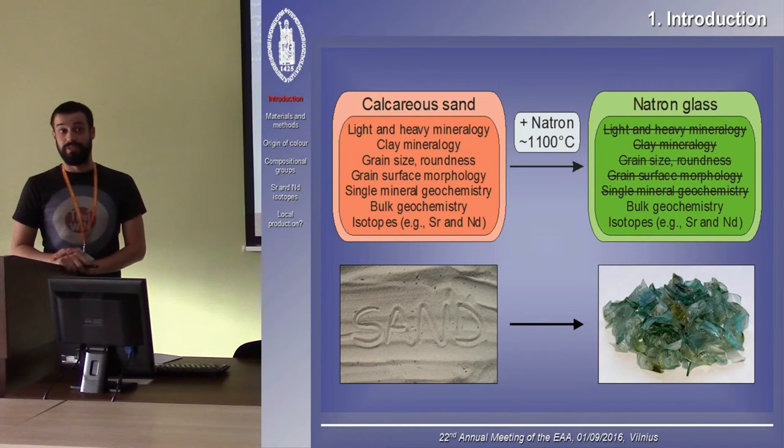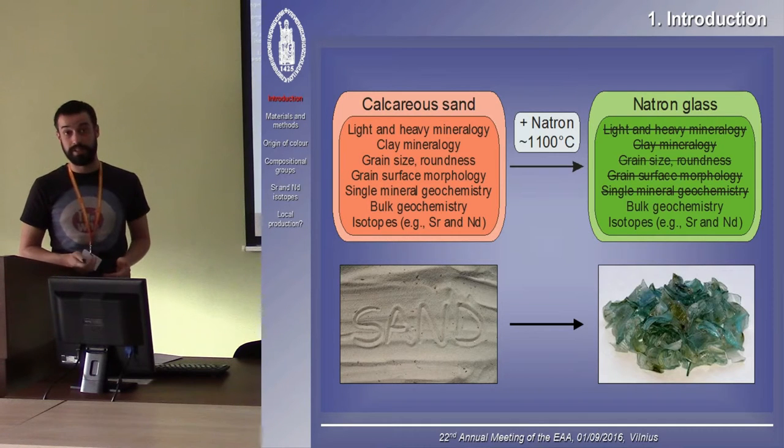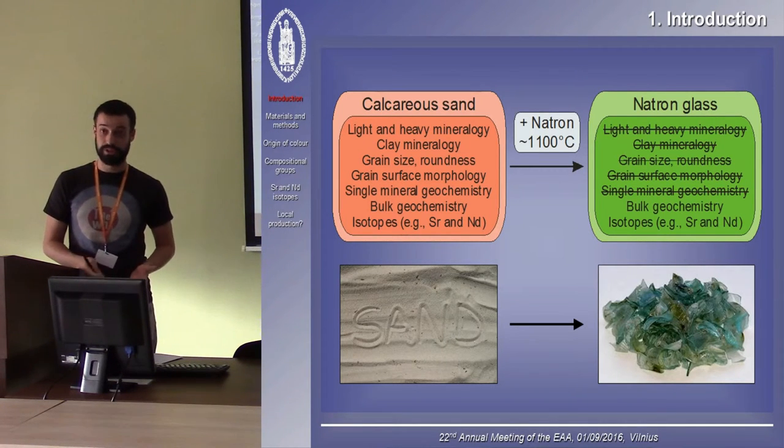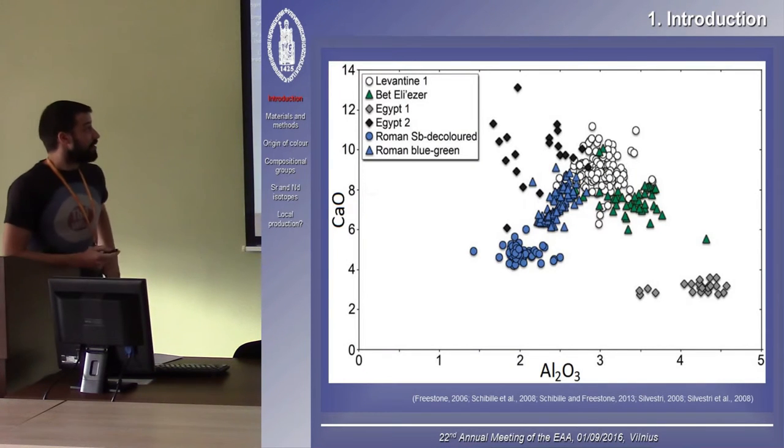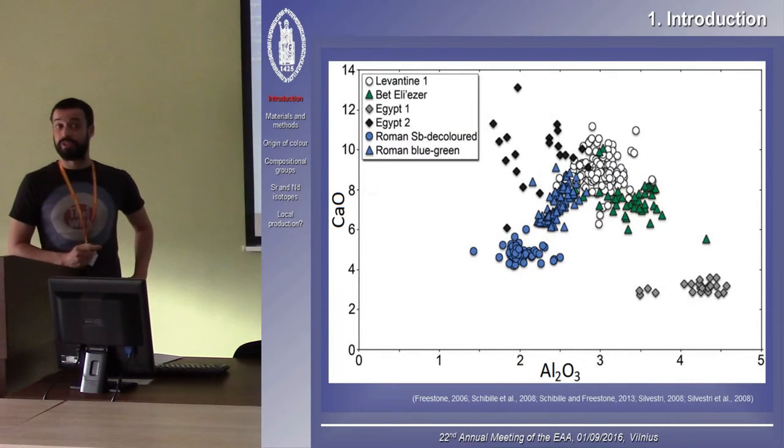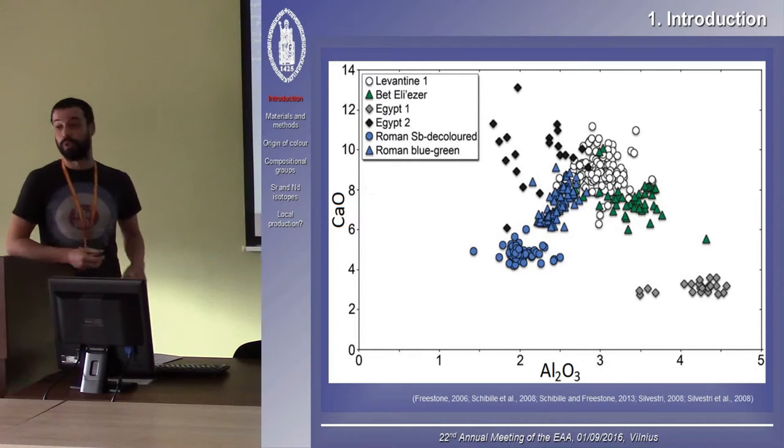Provenance in natron glass is not easy, because during the production of natron glass, the melting of the sand, a lot of the characteristics of the sand raw materials, such as light and heavy mineralogy, grain size and shape, are lost. Only bulk chemical data can be used to differentiate between possible sources. Several major compositional groups have been identified in literature, mostly based on concentrations of elements such as calcium, aluminum, but also iron and magnesium, because these elements can be related back to specific minerals in the sand raw material.